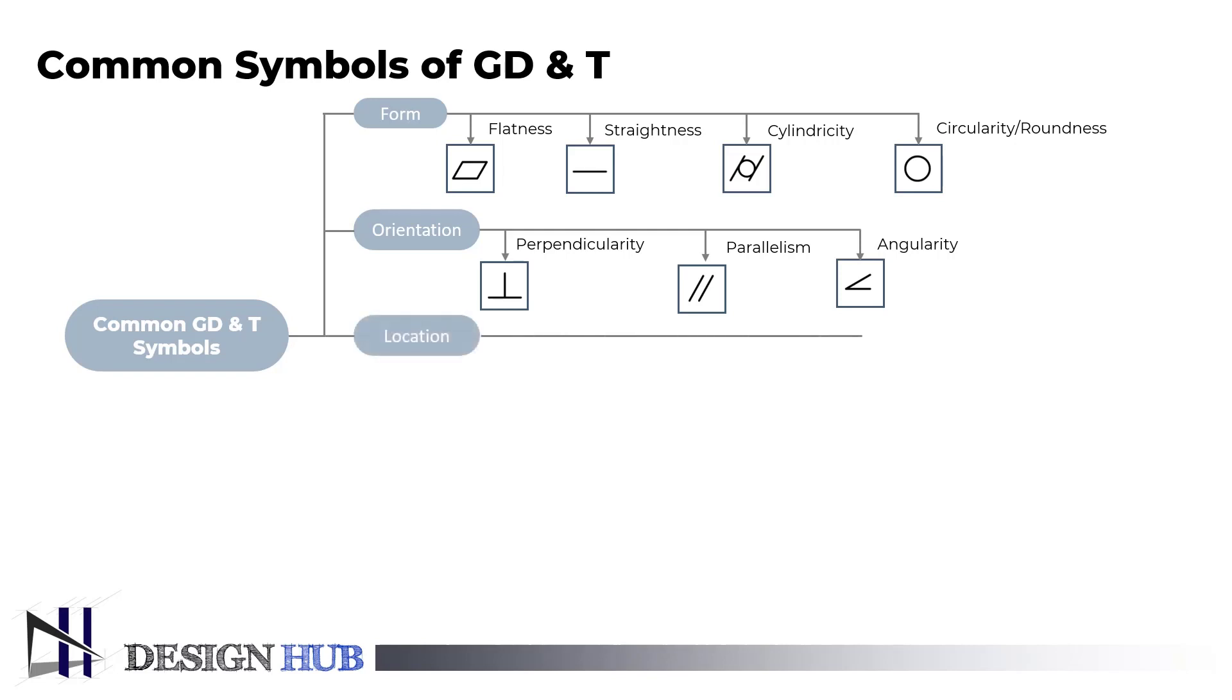In location type tolerance, we have position, concentricity, and symmetry. The features location, true position, in relation to a reference is determined by location tolerance. Since a datum is always required to indicate location tolerance, geometric tolerance applies to datum related features.